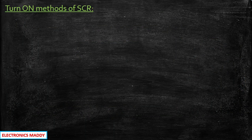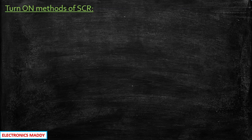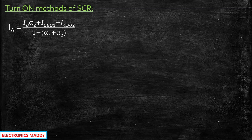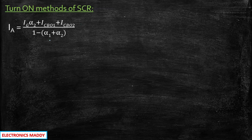What do you understand by the term Turn On Methods of SCR? The methods that are associated for turning on the SCR are basically turn on methods. When we talk about turn on methods, there are different methods. In my previous video, I mentioned that the anode current expression derived from the two transistor model of SCR will play a very important role in these turn on methods. So how that happens is what we are also going to see.